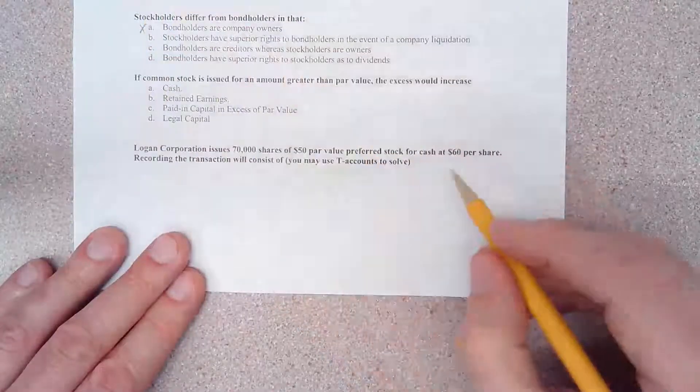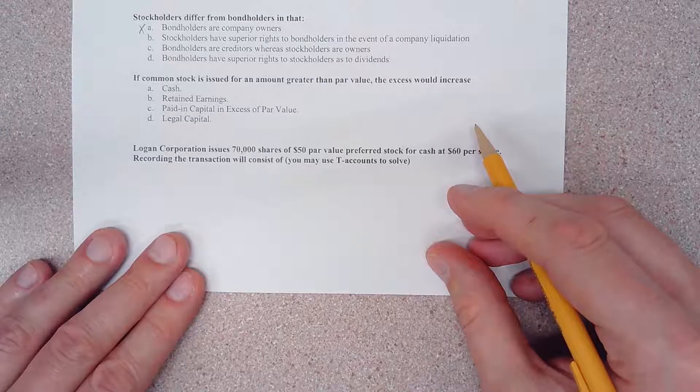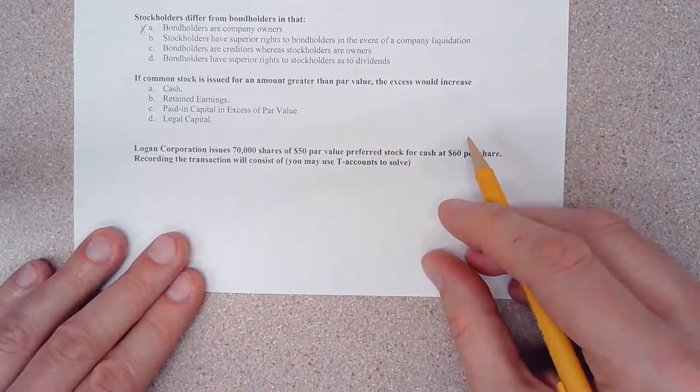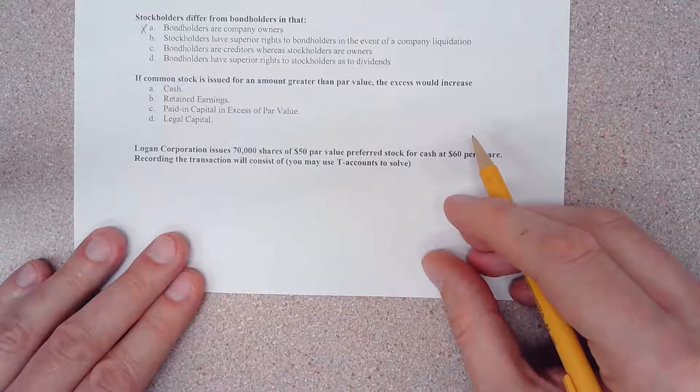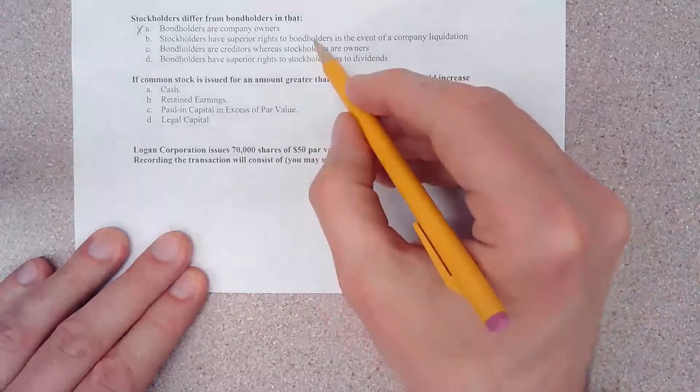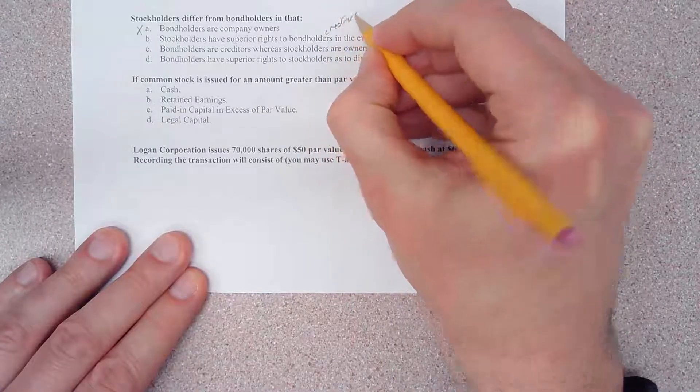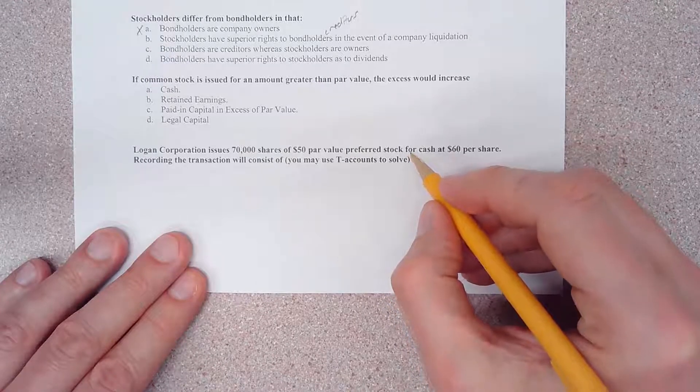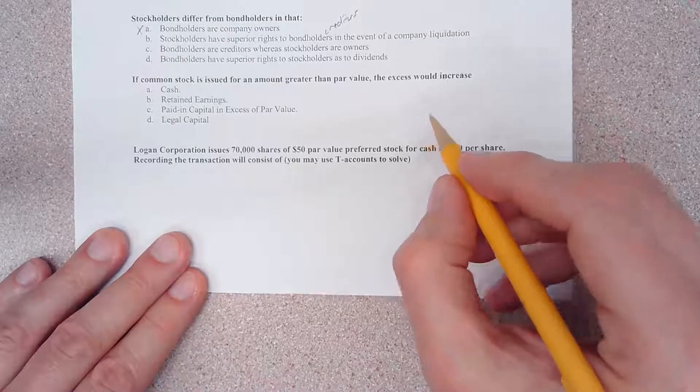Let's put an X by choice A. Choice B says stockholders have superior rights to bondholders in the event of a company liquidation. This is also an incorrect statement. Bondholders are creditors, and bondholders have superior rights to company assets in the event of a liquidation.